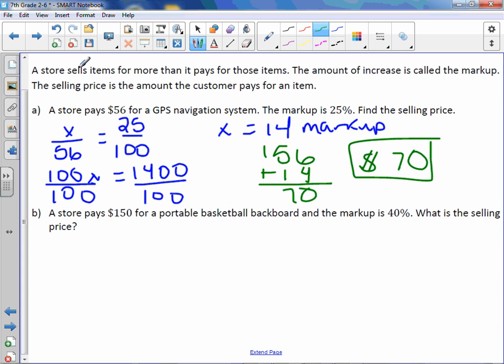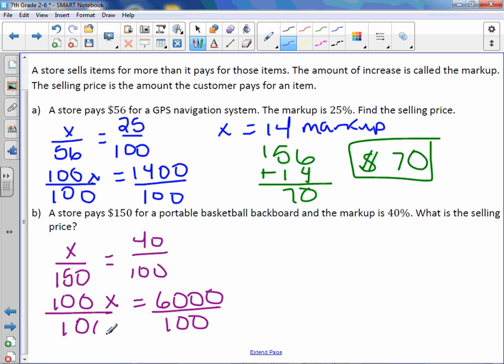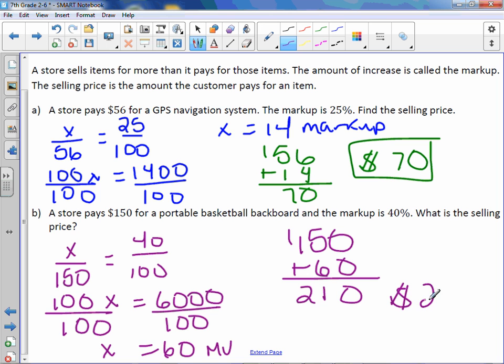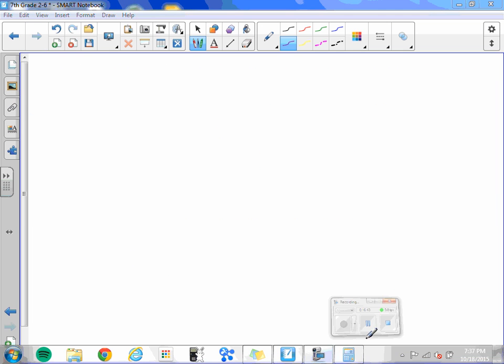Letter B. A store pays $150 for a portable basketball backboard and the markup is 40%. What is the selling price? So we have our part over a whole amount of $150 equals 40% over $100. Cross multiply. 100X equals $6,000. Divide by 100. X equals $60. And this is a markup. Take your $150 cost, add the $60 markup. And they are going to sell it to you at a selling price of $210.